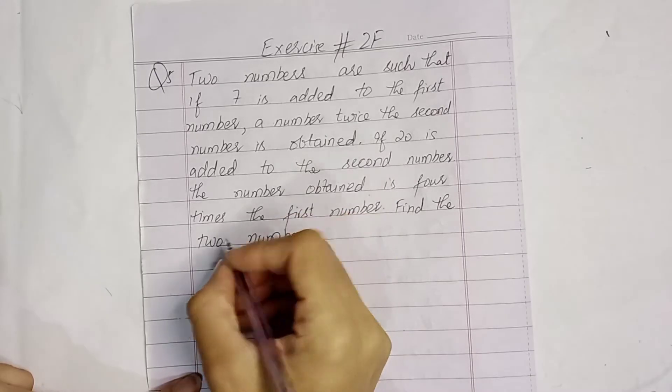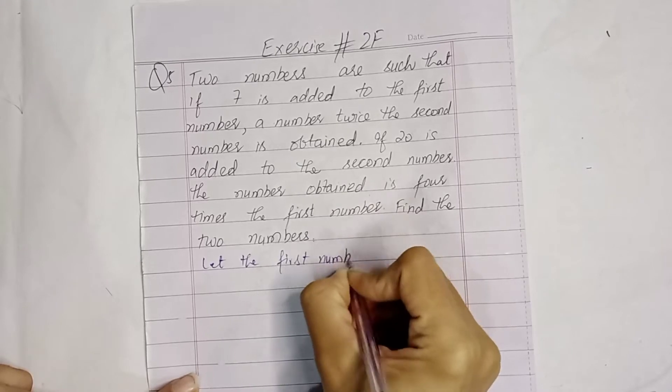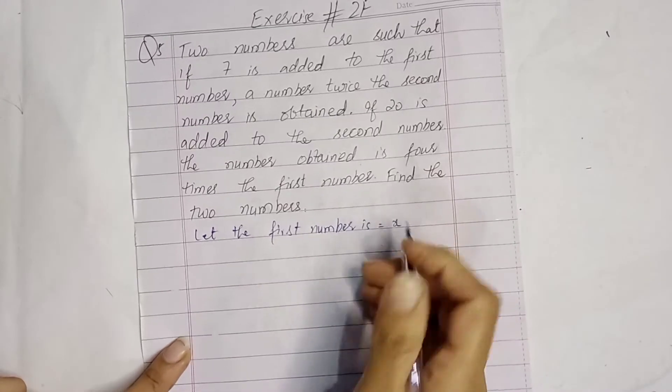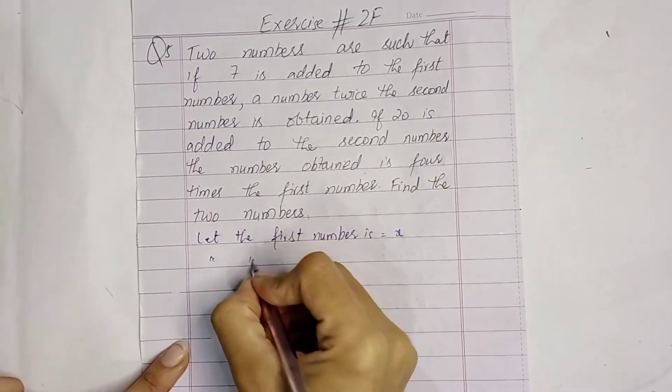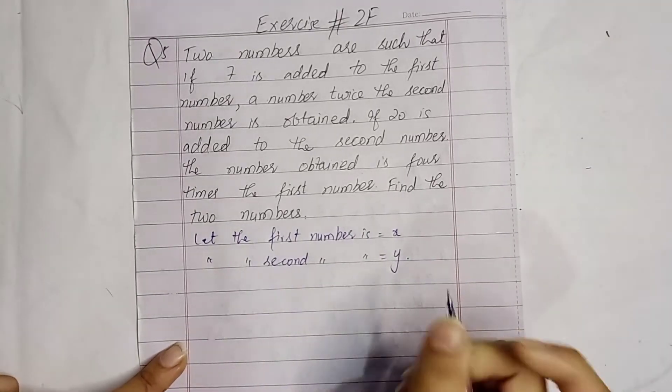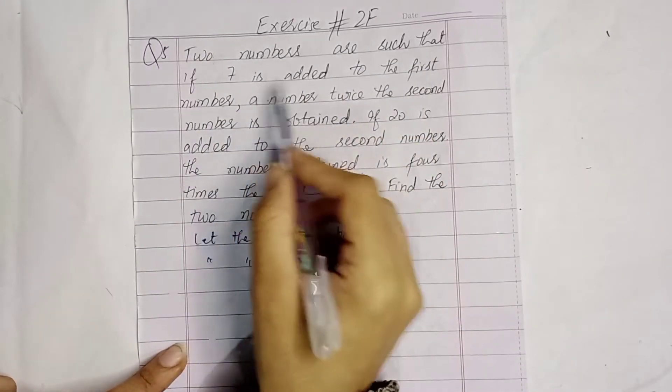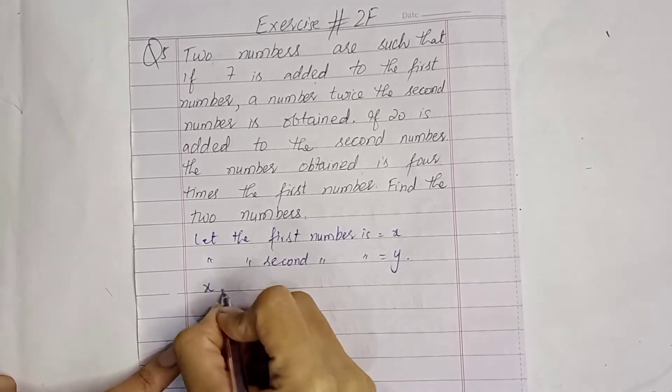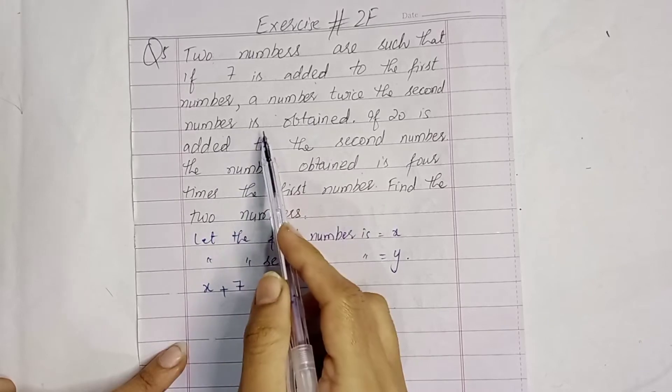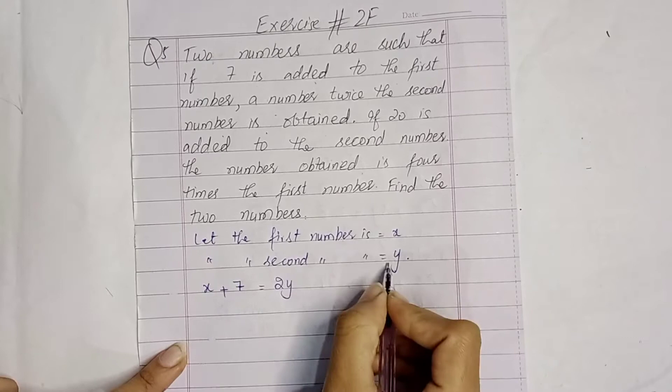Let's suppose the first number is x and the second number is y. Two numbers are such that if 7 is added to the first number, x plus 7, twice the second number is obtained, equals 2y.